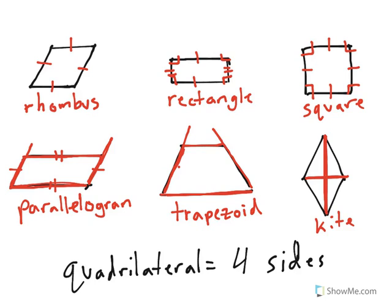What's interesting about quadrilaterals is they can be more than one quadrilateral. For example, this rhombus up here is also a parallelogram because it has opposite sides that are equal and the opposite sides are parallel. This square over here is also a rectangle because it has opposite sides that are equal and four right angles. So it's important to pay attention to the shape to see if it's actually possible that it's more than one shape.